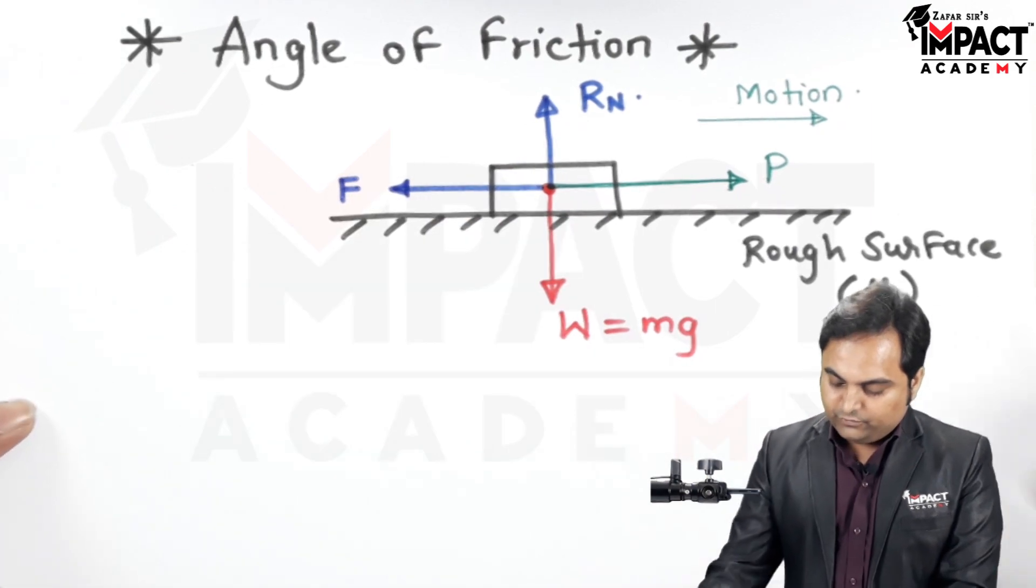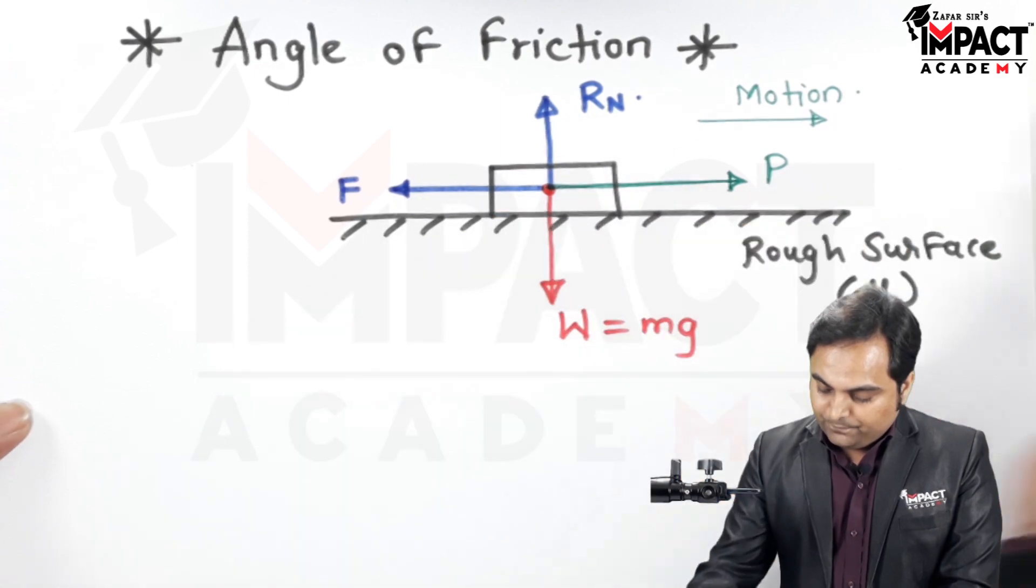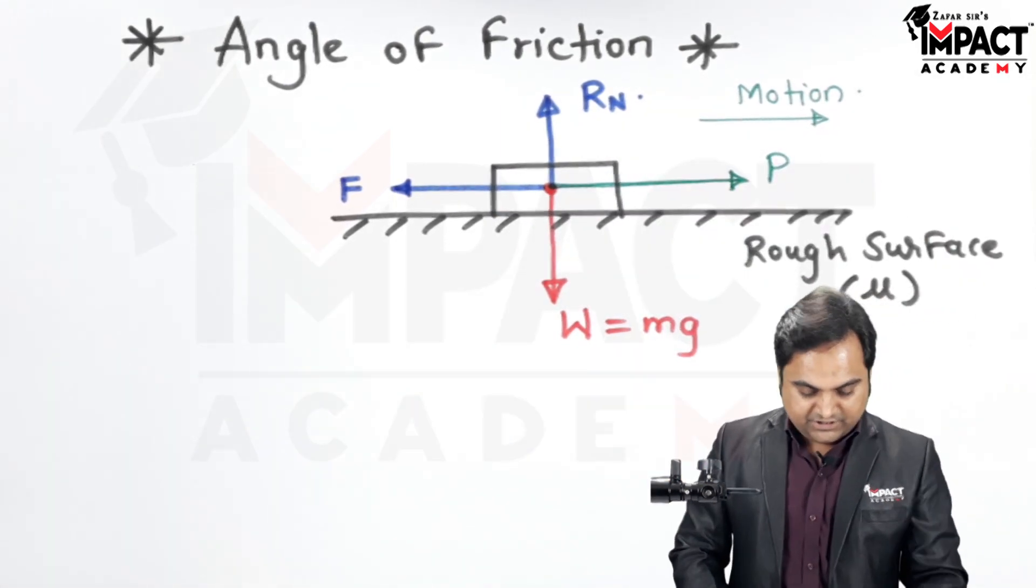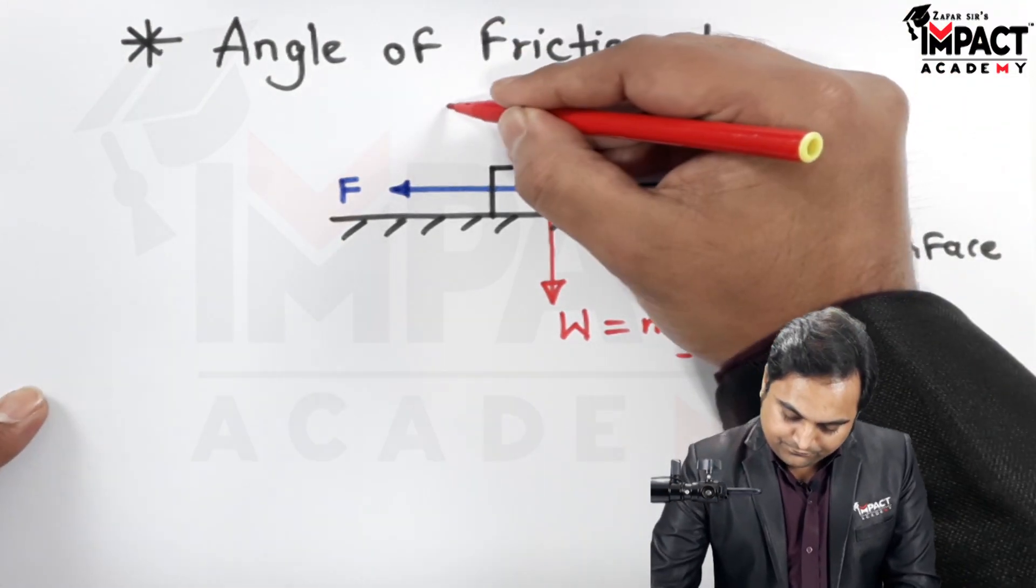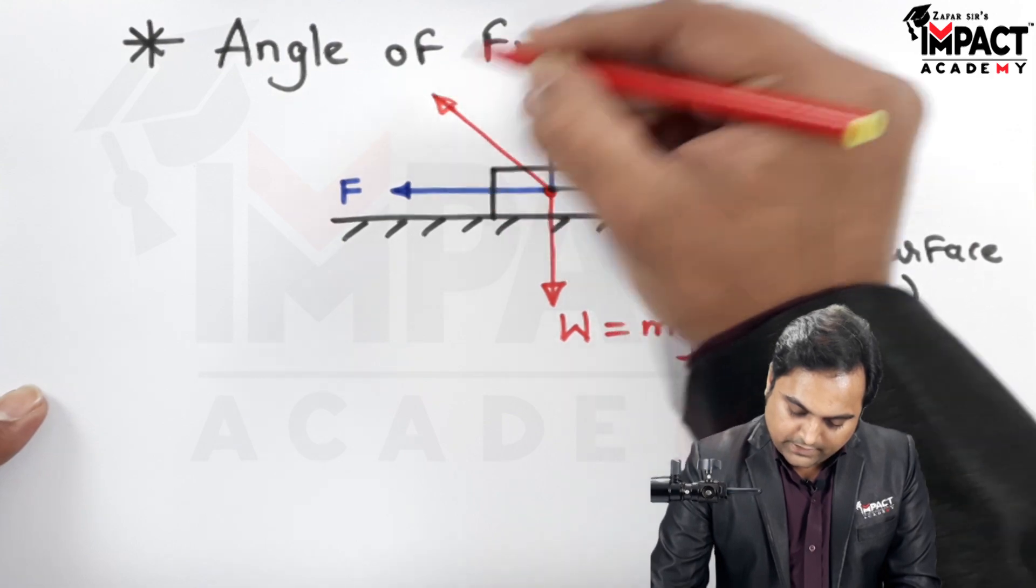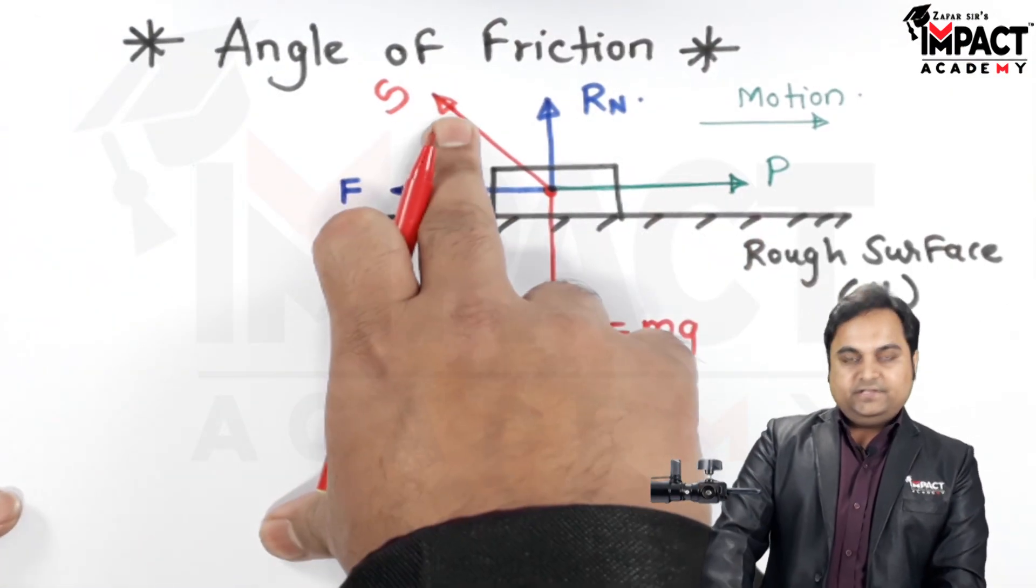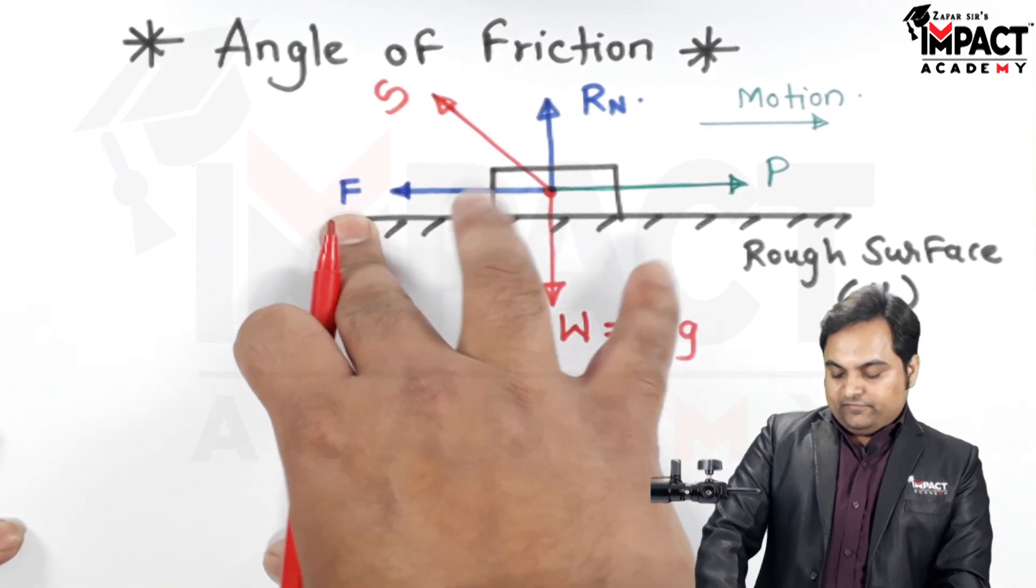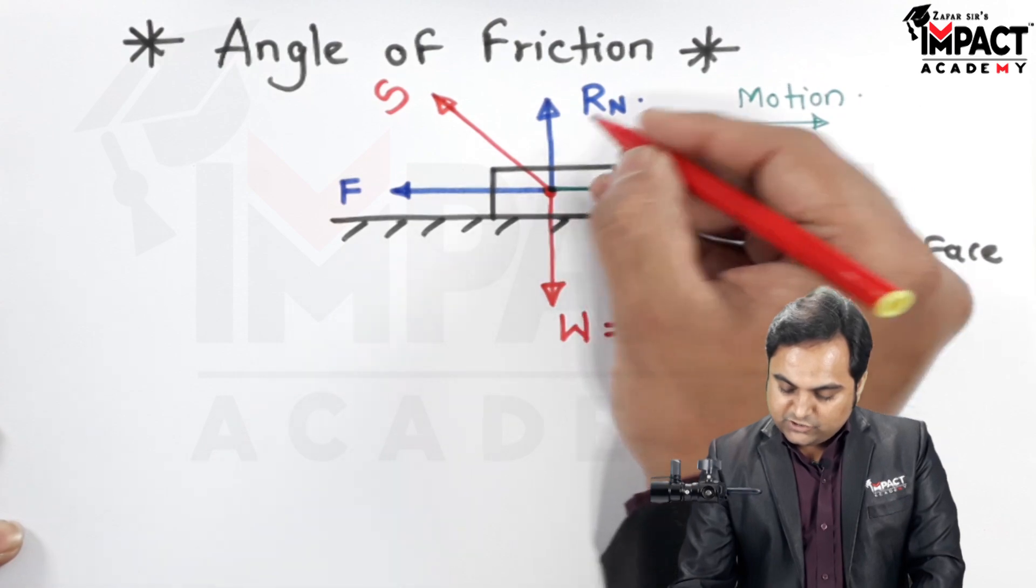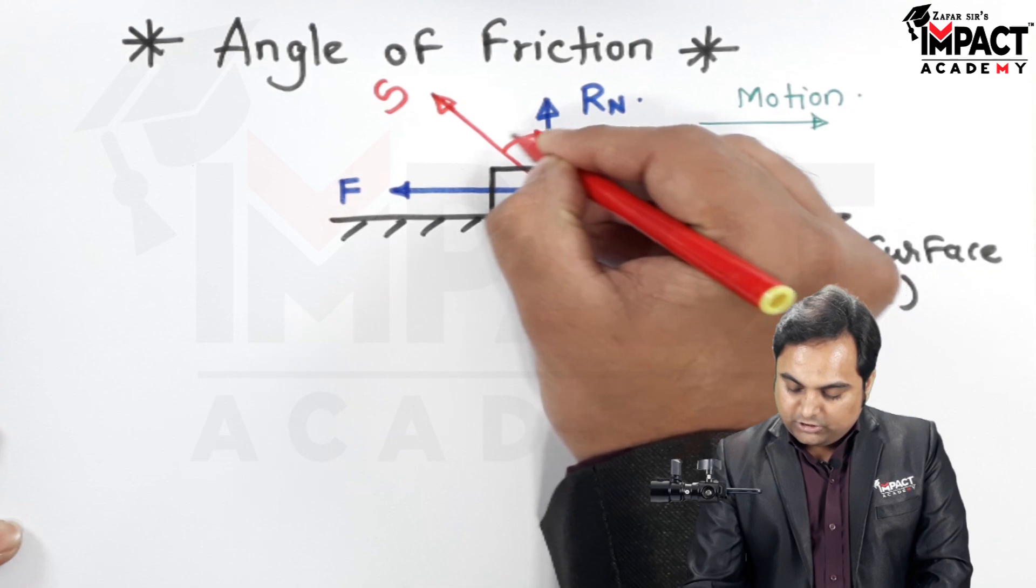So this is the frictional force which is opposite to this motion and now here there will be a resultant reaction. It will be acting and this resultant reaction would be denoted by S and it is the resultant of frictional force and the normal reaction. And so the angle made by the resultant reaction with this normal reaction is called as the angle of friction denoted by phi.